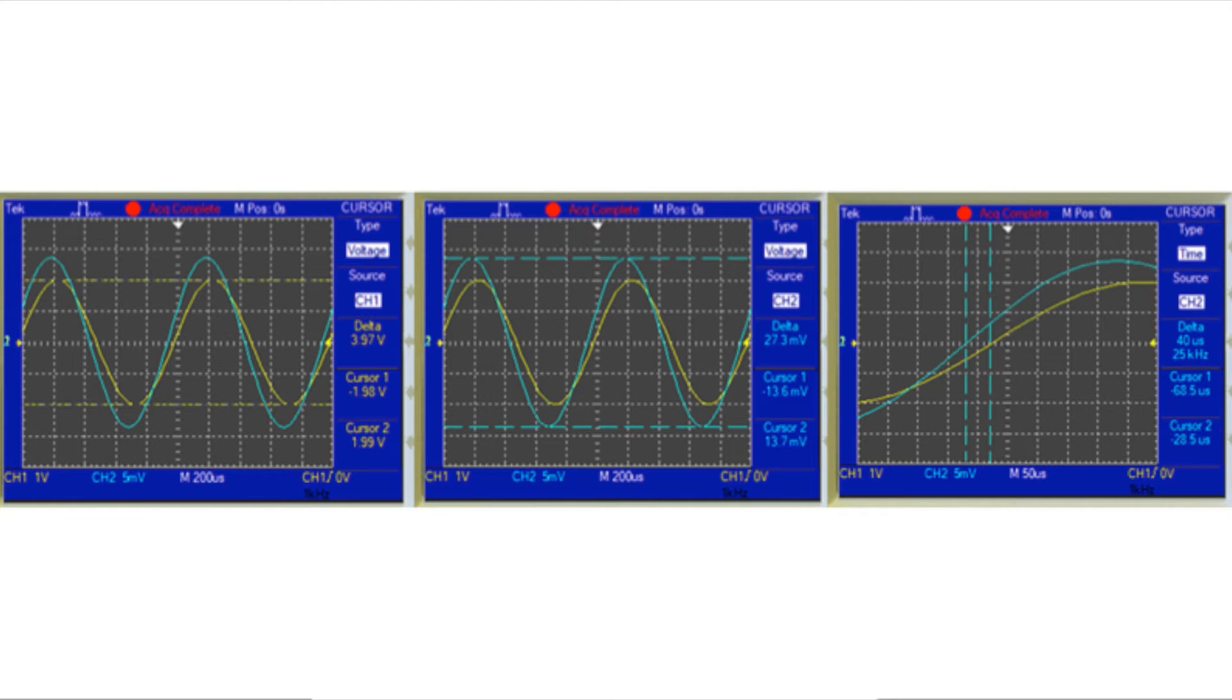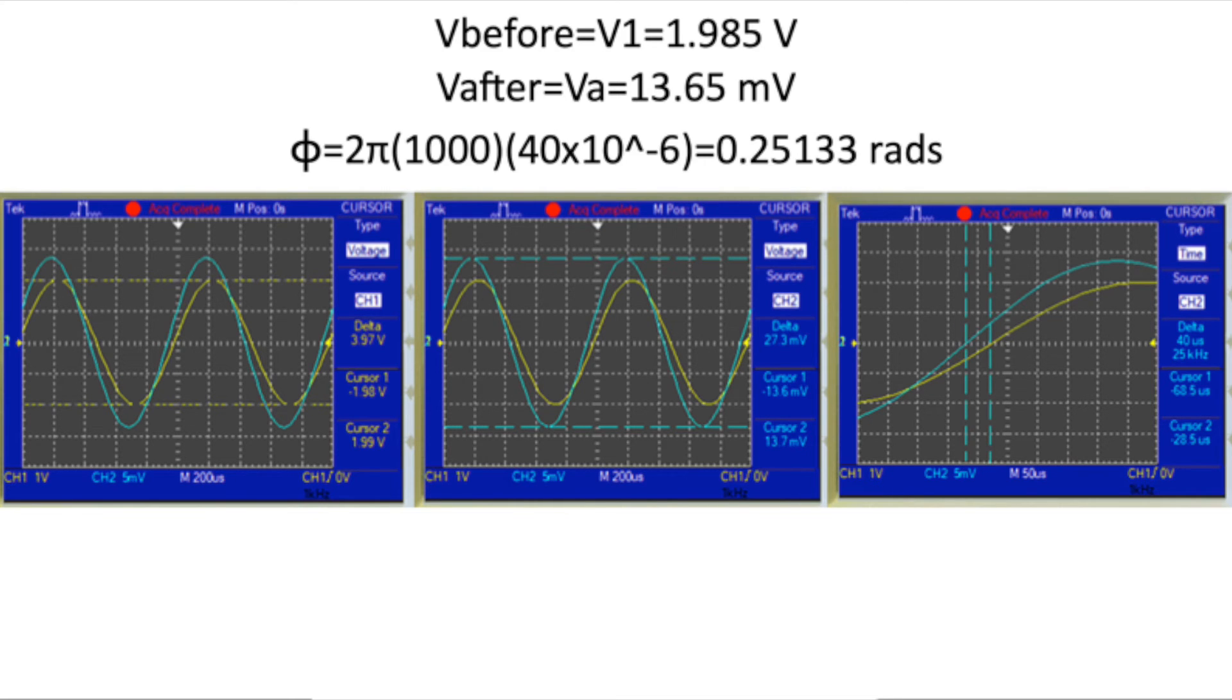In the first screenshot, I am measuring the amplitude of the voltage before the load network. In the screenshot in the middle, I am measuring the voltage after the load network, and in the screenshot on the right, I am measuring the time difference between the two voltages. According to NI Multisim, this gives us a power factor of roughly 0.968.